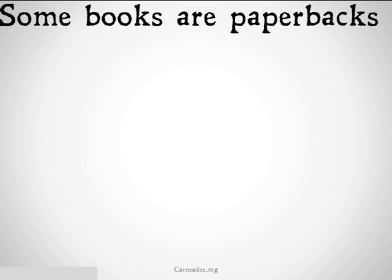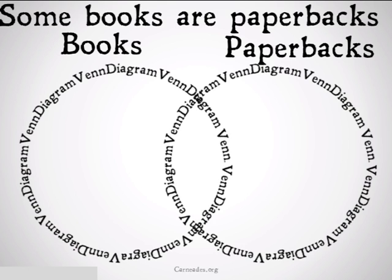Let's take a look at an example. Some books are paperbacks. We have books on one side, paperbacks on the other. We fill in our Venn diagram and put an X in the middle to represent that at least one book is also a paperback. This doesn't mean that there aren't some books that aren't paperbacks. There might even be some paperbacks that aren't books, or things out there that are neither paperbacks nor books. All this is saying is that there's at least one thing that is both a book and a paperback.